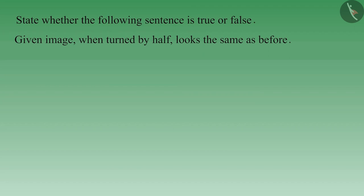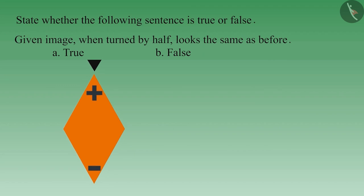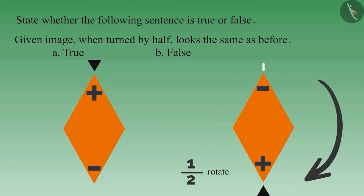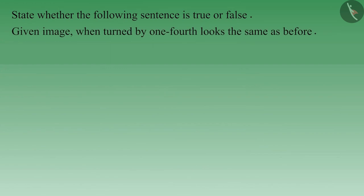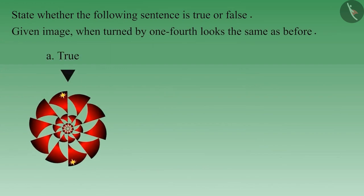State whether the following sentence is true or false: the given image looks the same as before when turned by half. If you consider this statement true, you must be thinking that on turning the image by half it looks like before. But you are not paying attention to the symbols on the image. If we turn the image by half, the position of the symbols will change. On turning by half, this image does not look the same as before. Therefore this statement is false.